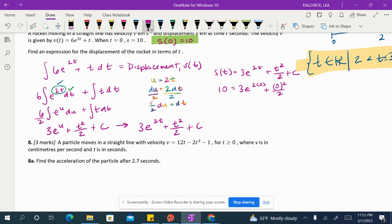So now we've got... Okay, then this is going to give us 10 is equal to 3 times 1 plus 0 plus C. And now we have 7 is equal to C. So our final expression for the displacement of the rocket in terms of T will be 3e^(2T) plus T squared over 2 plus 7.